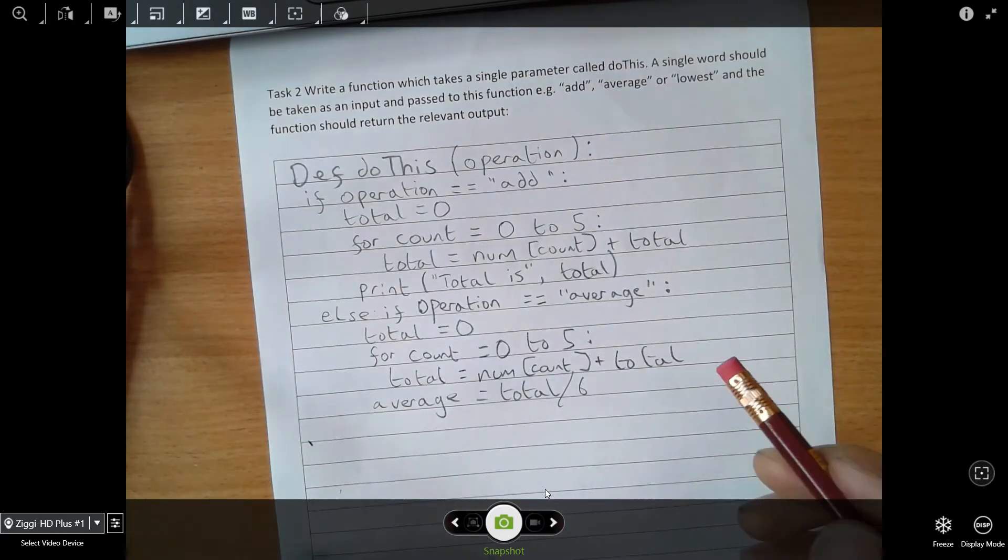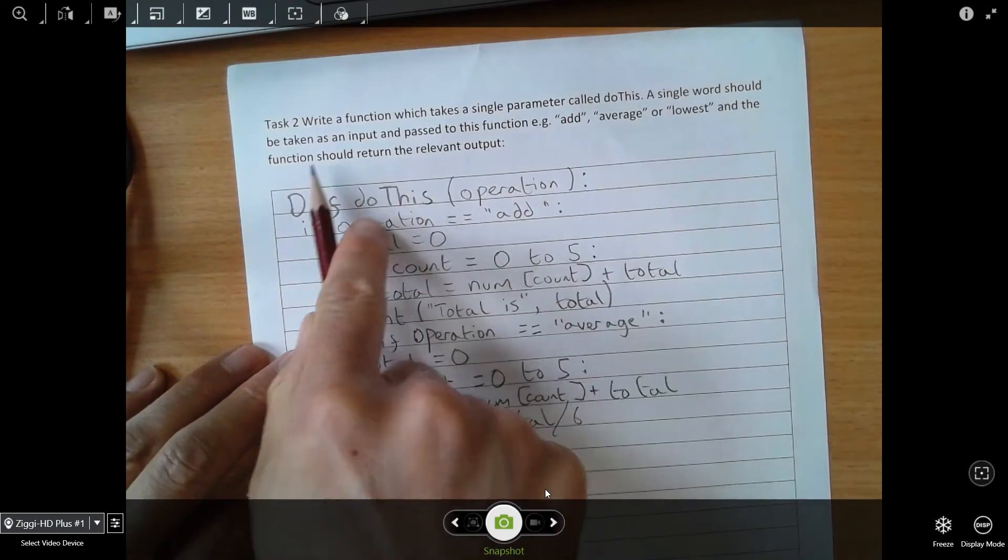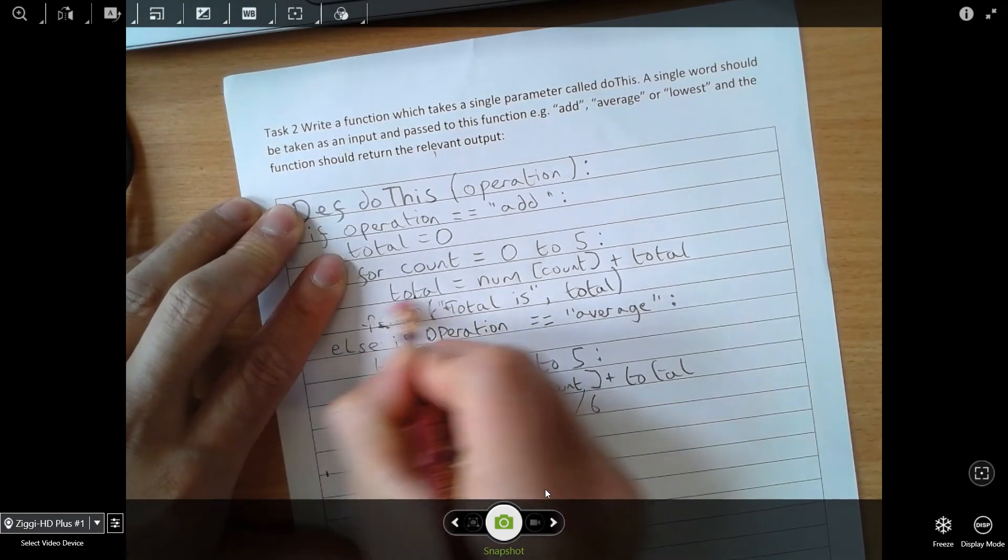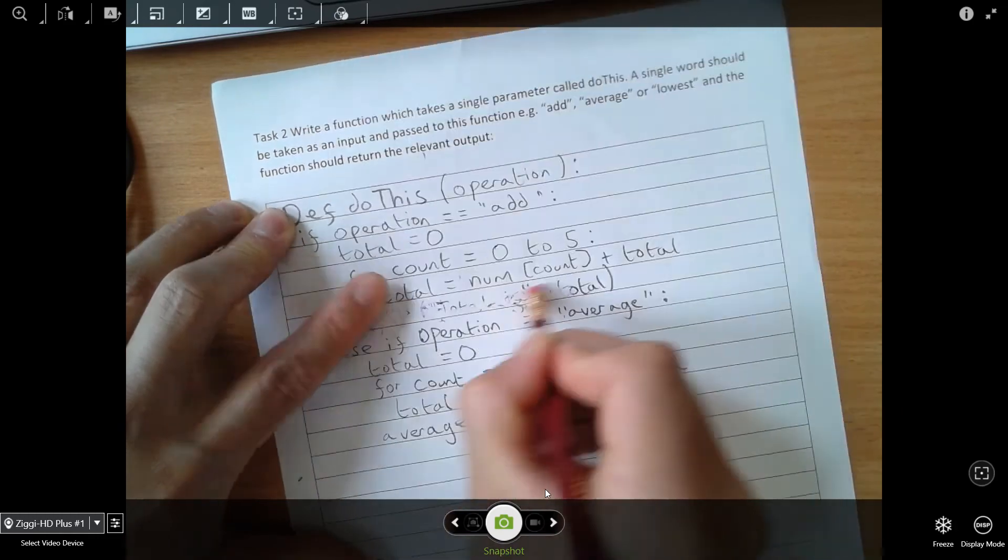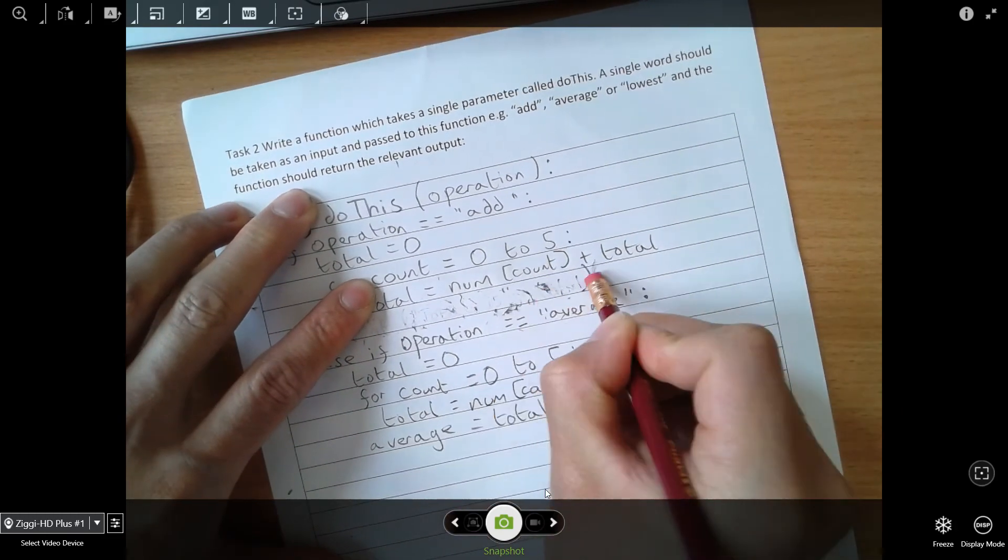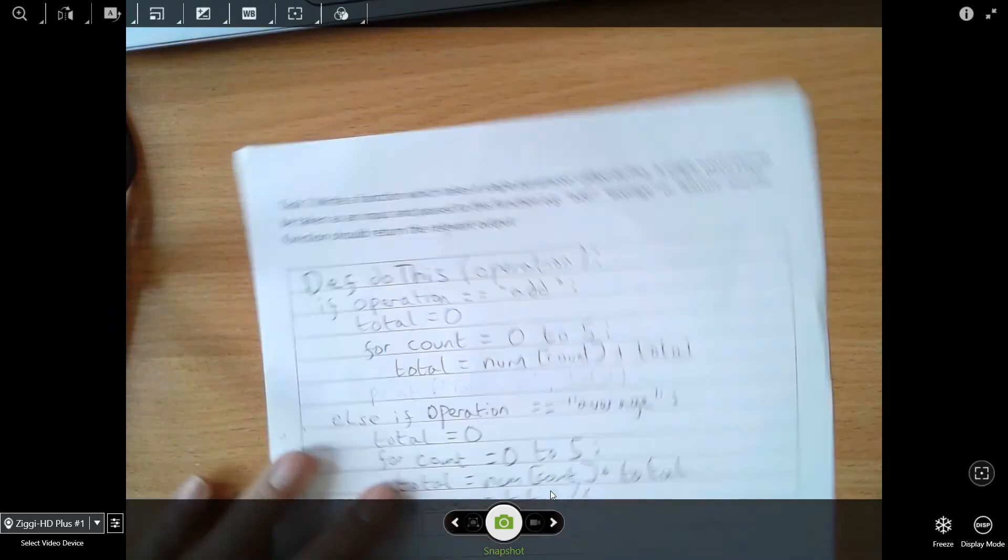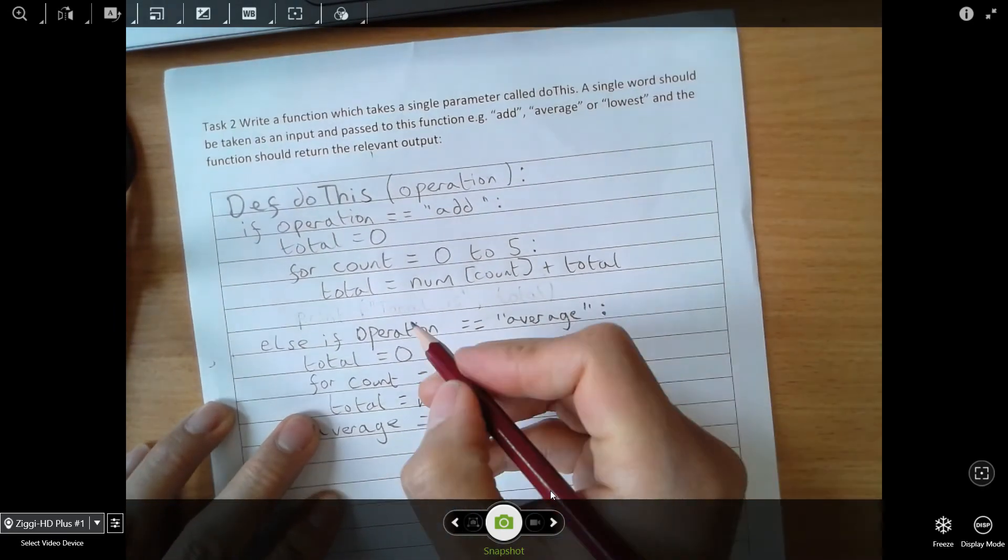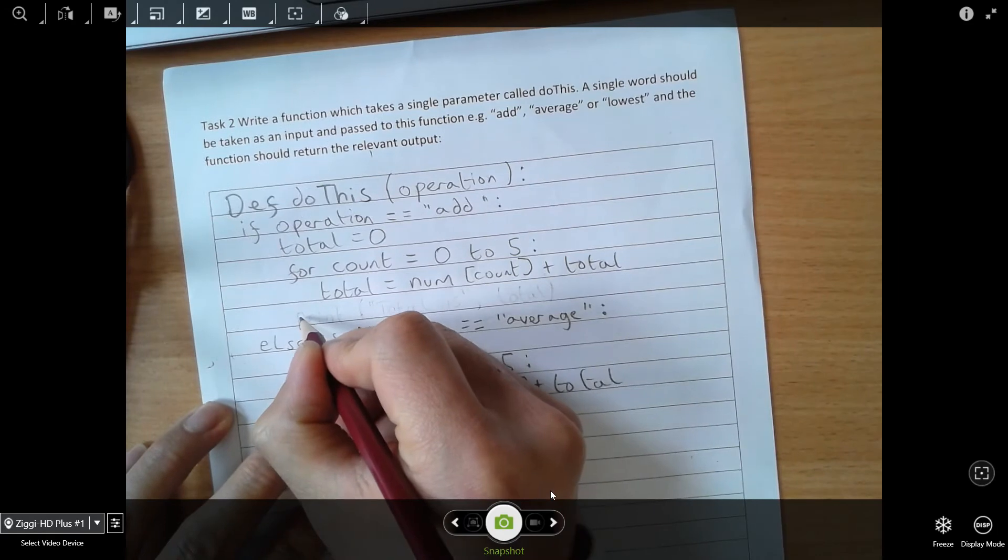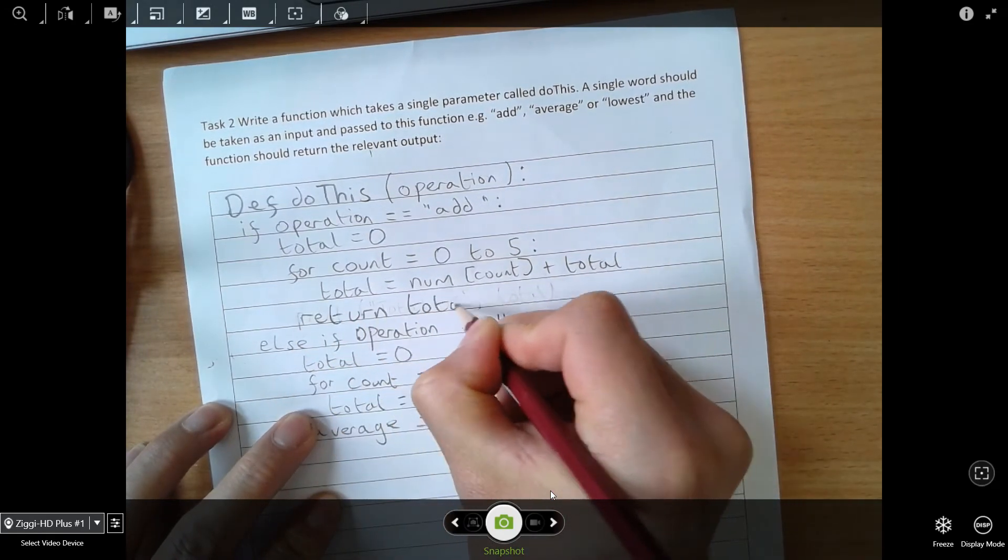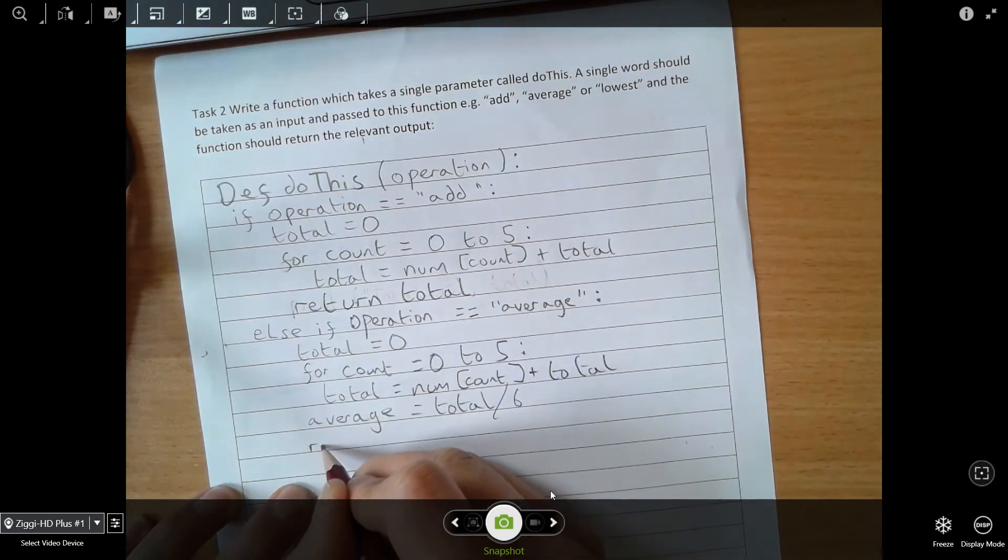The key thing here is it says the function should return the relevant output. We should never - if they ask for return, then we don't print, we use that keyword return. So just to scoot back here, we need to return total. Likewise here, we're going to return average.